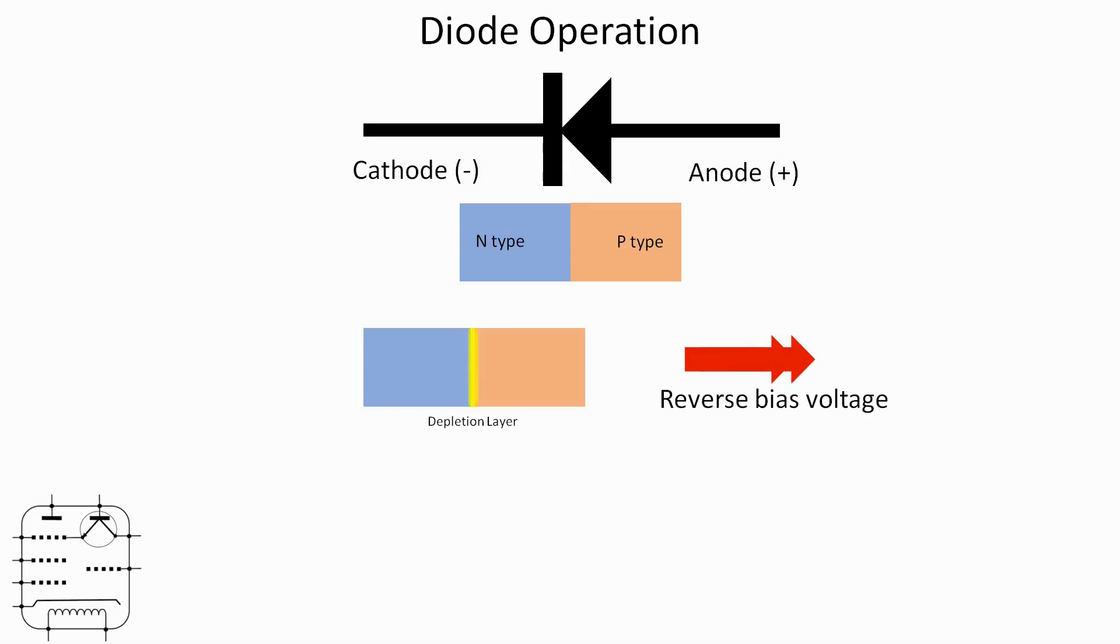Now if we increase the reverse bias voltage, we increase the width of the depletion layer and depending on the type of diode we can increase that width more or less.